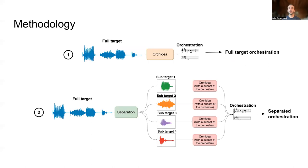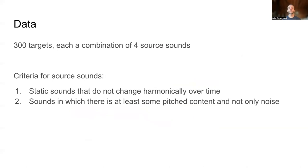To test our hypothesis, we designed an experiment with two main steps. First, a target sound is orchestrated with Orchidea without any separation performed — we call this the full target orchestration, and it's our baseline. Next, we take the same target but first apply a source separation method, which splits the target into four sub-targets. Each sub-target is then input to Orchidea with a subset of the orchestra. These orchestrations are then combined to play simultaneously, creating the separated orchestration. We created 300 target sounds, where each target sound is a combination of four source sounds drawn from a handpicked collection of 90 source sounds. The targets are generated to have sources overlap in time.